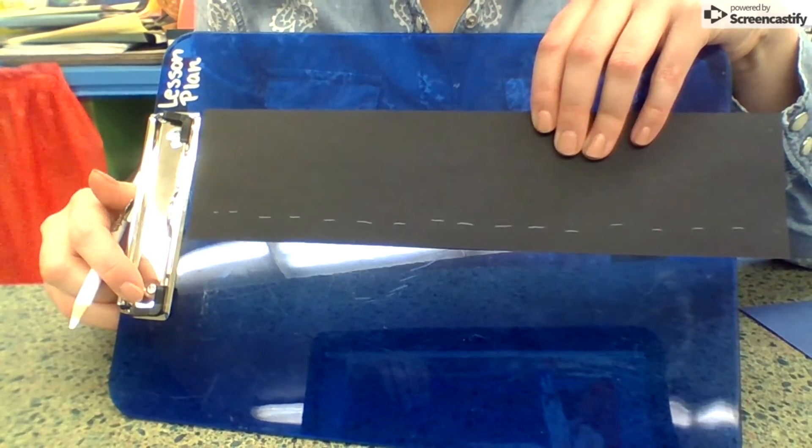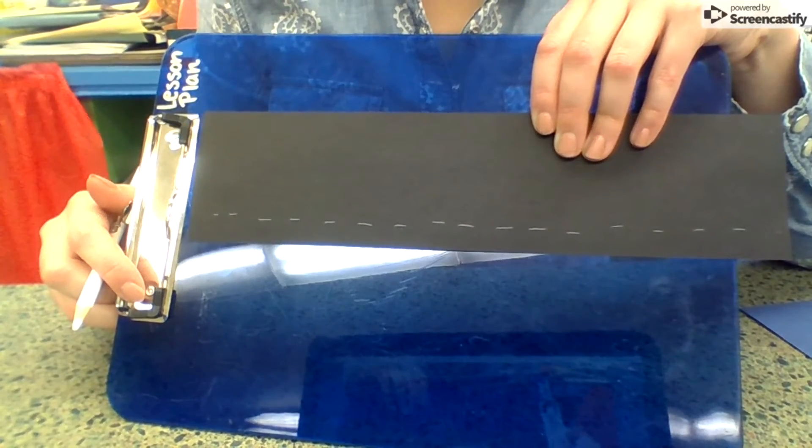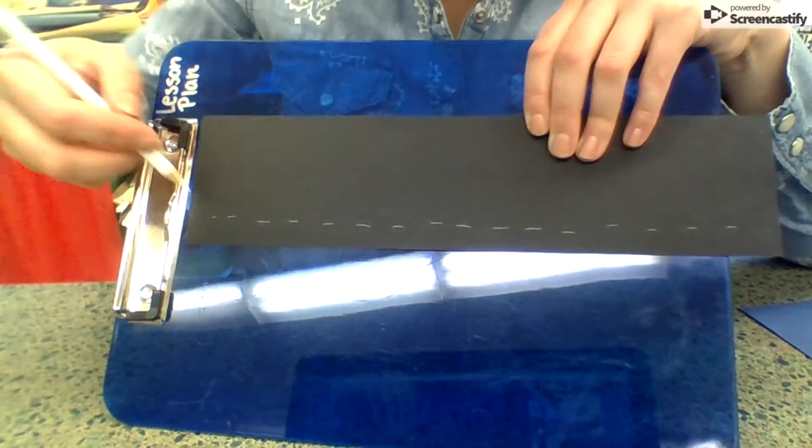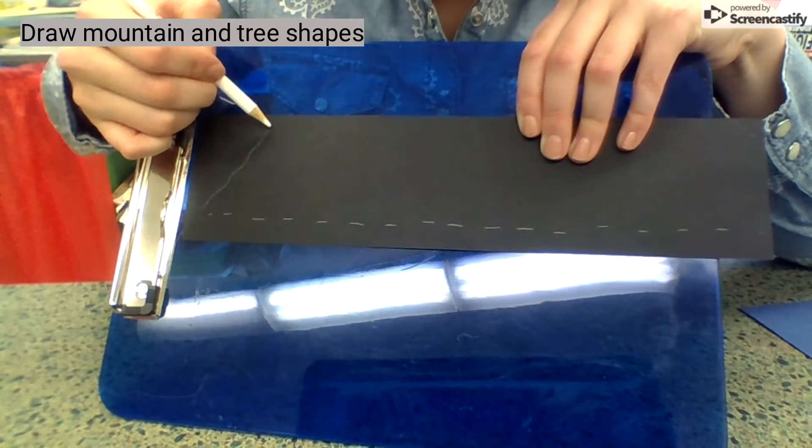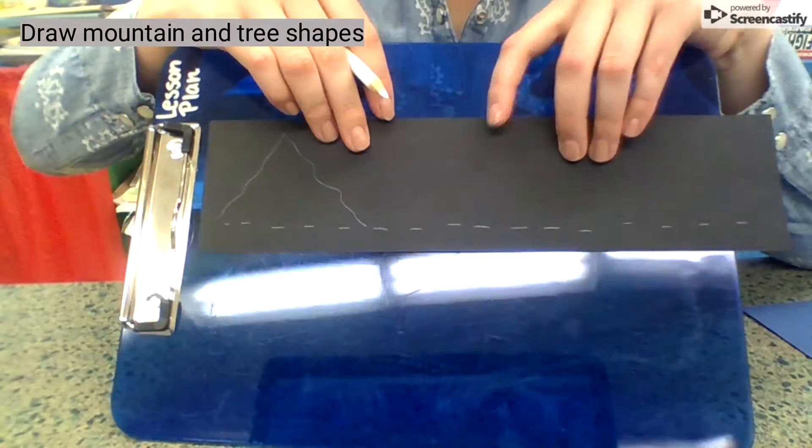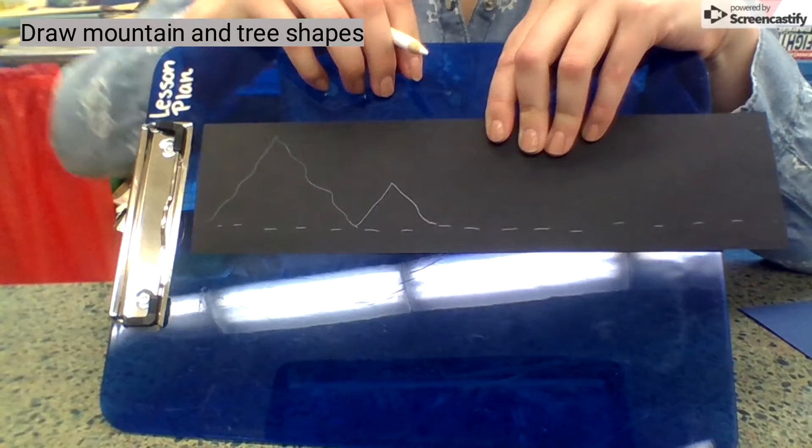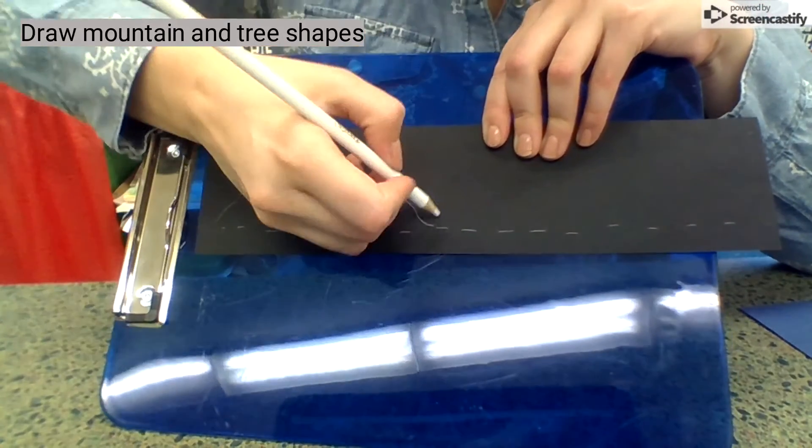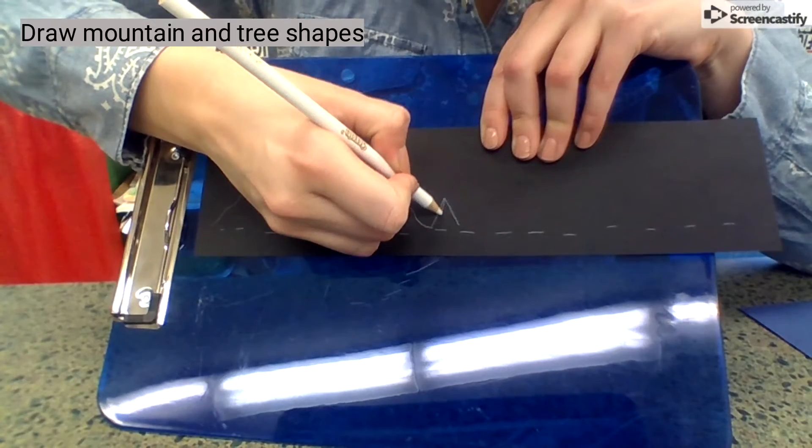The next step is that we're going to draw our mountains and our trees like the northern pole landscape. Mountains are really just squiggly triangles. They don't need to be perfect. They can be different sizes. If you would like to put an evergreen tree, it's more like just a regular small triangle.